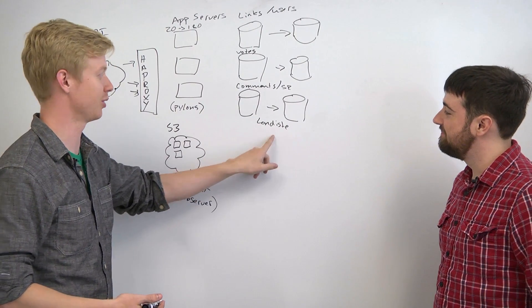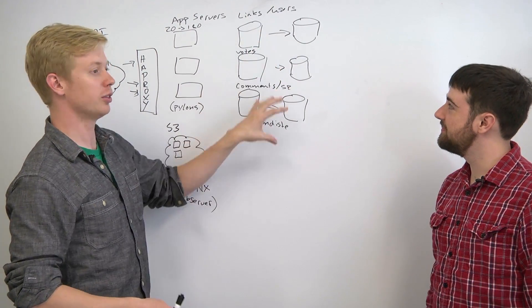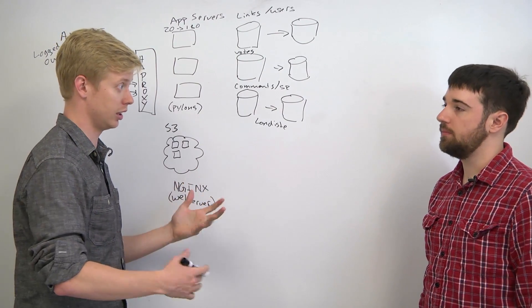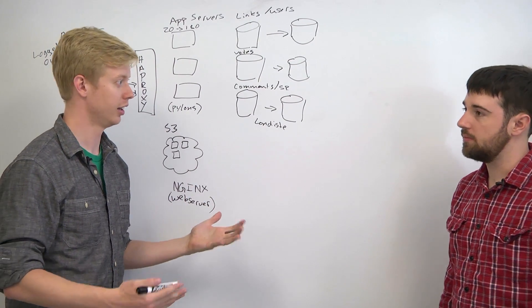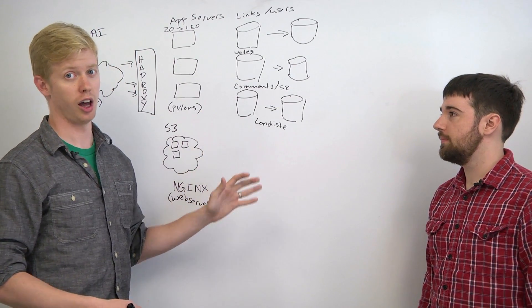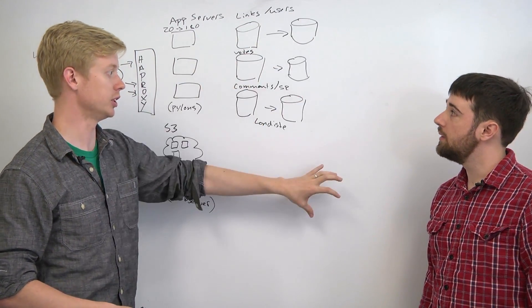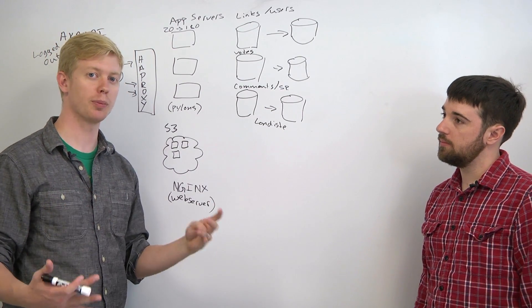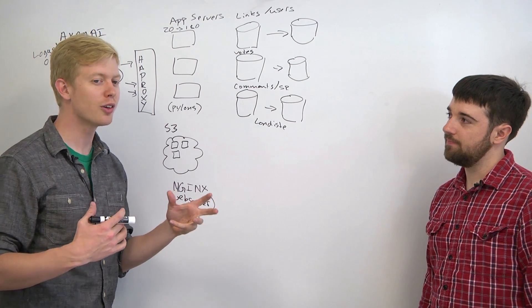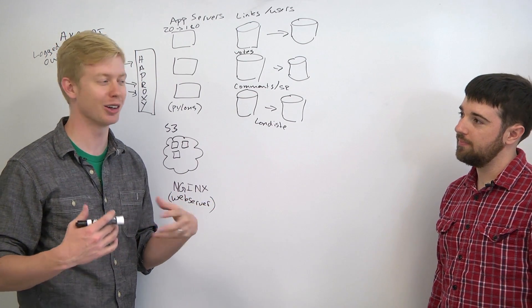We replicate all of these machines, both for durability - so if we lost a machine, we wouldn't lose our data. On Reddit, if we lost your comment history, you'd be mad - and for load. We spread our reads across all these machines. Remember we talked about replication lag? I learned this lesson the hard way. It was really hard for me to figure that out the first time, because I had never heard of replication lag. We had really subtle bugs as a result.